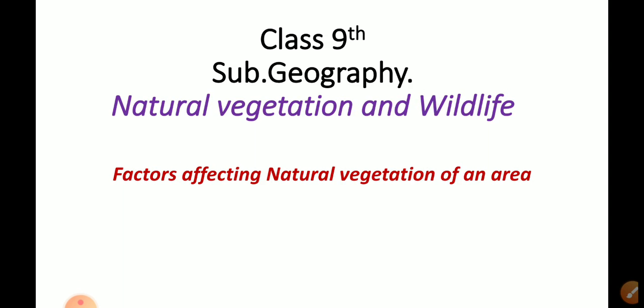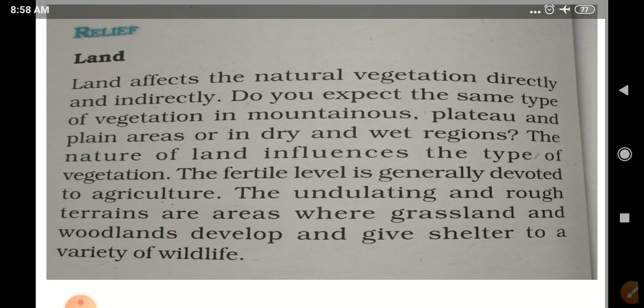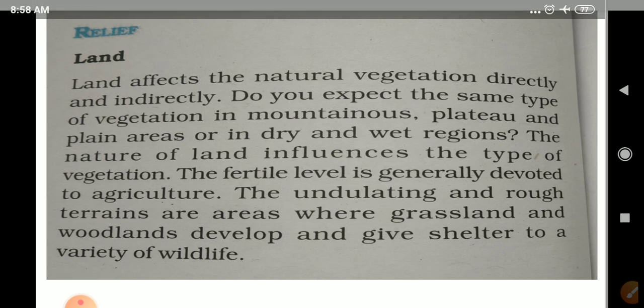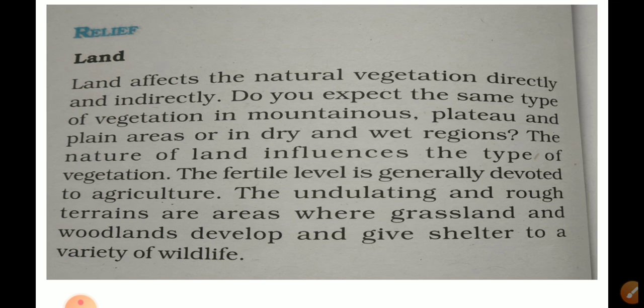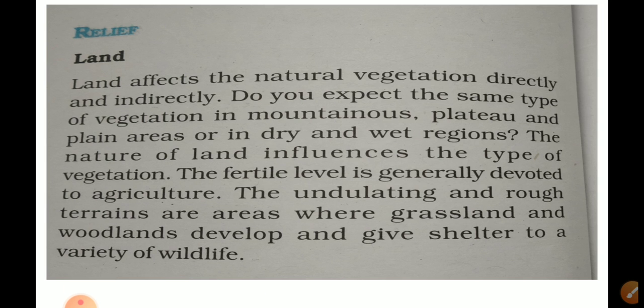What are the factors which affect the natural vegetation of an area? The main governing factor which affects the natural vegetation of an area is relief features — which includes land and the nature of the soil.